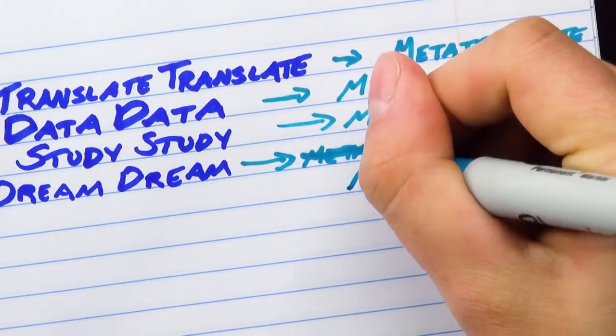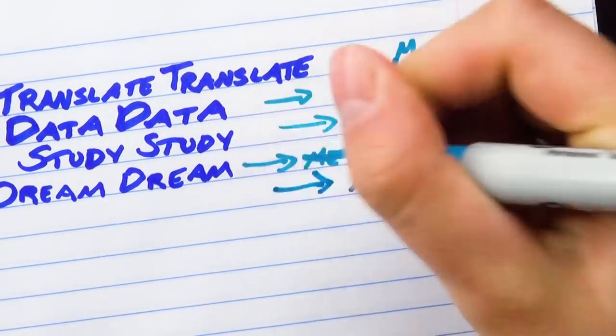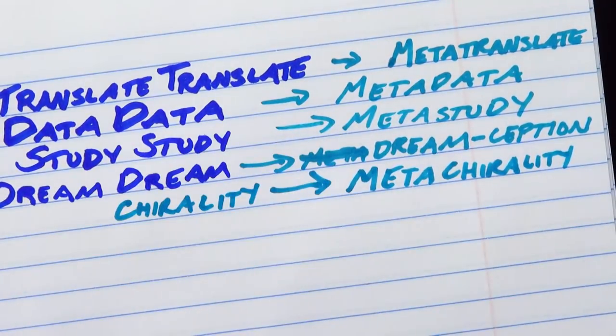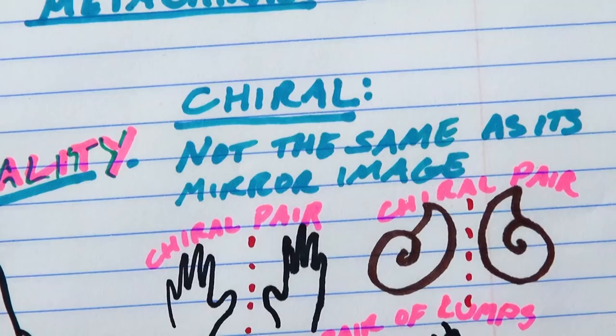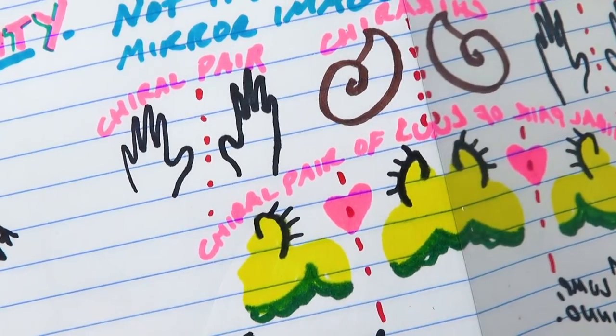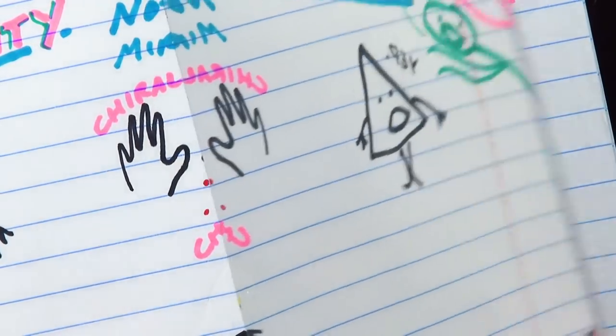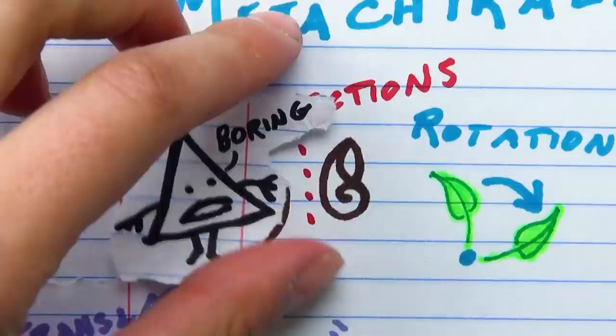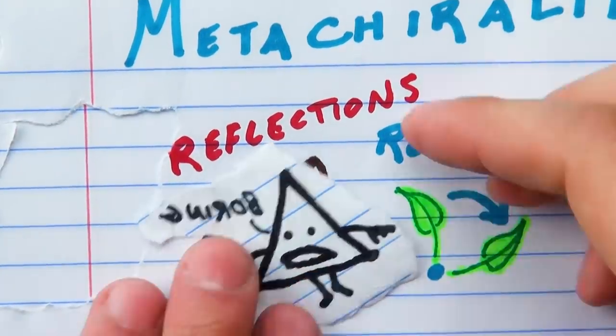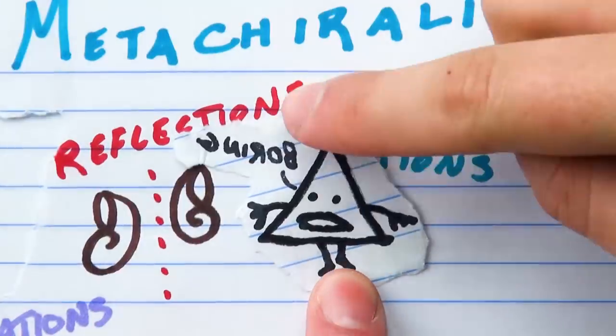Anyway, so you're really into this word metachirality, which you figure has got to mean like chirality that itself has chirality, because maybe that's a thing. But if chiral means something is not the same as its mirror image, what does it mean for something to be not the same as its mirror image in a not the same as its mirror image kind of way?